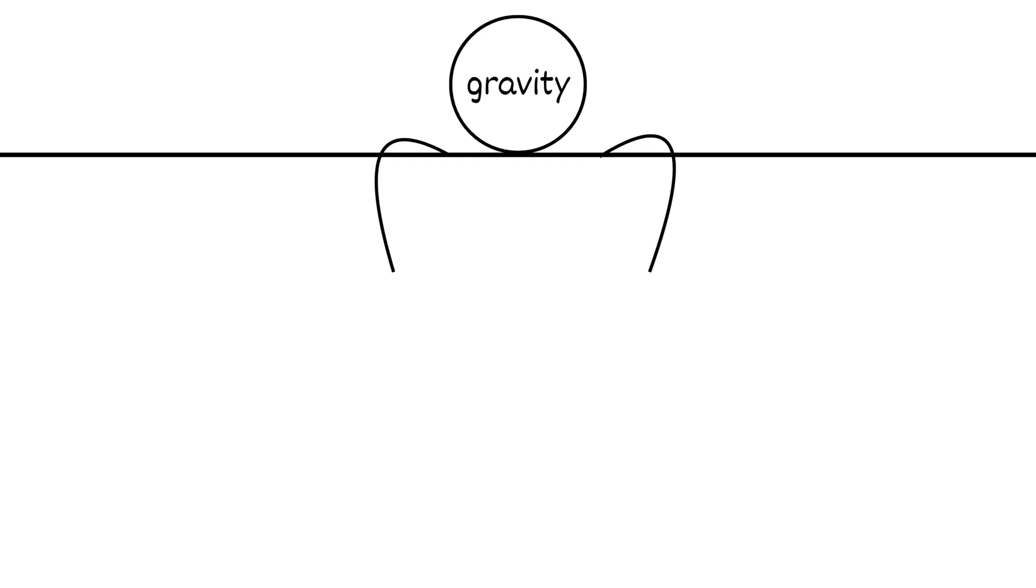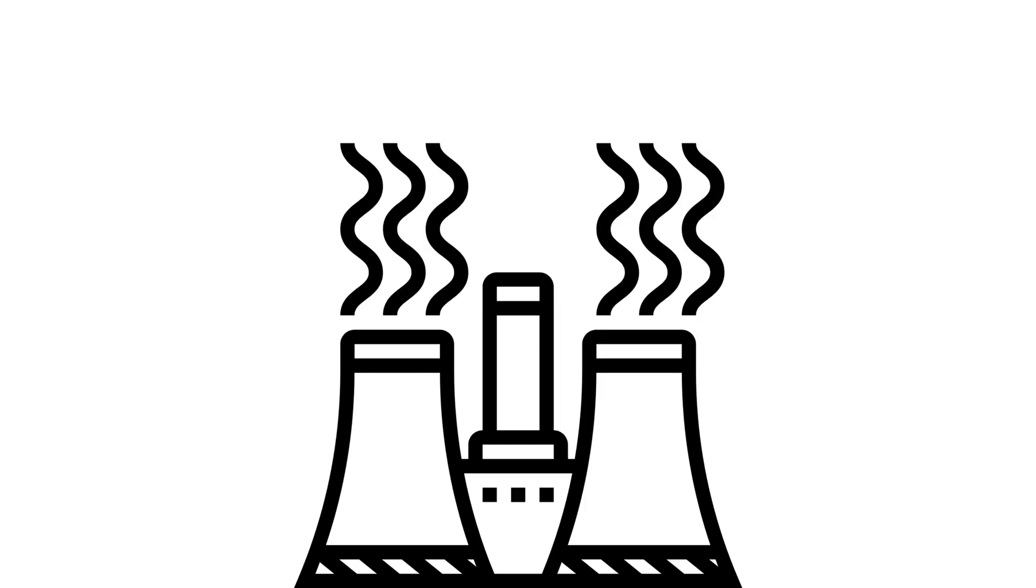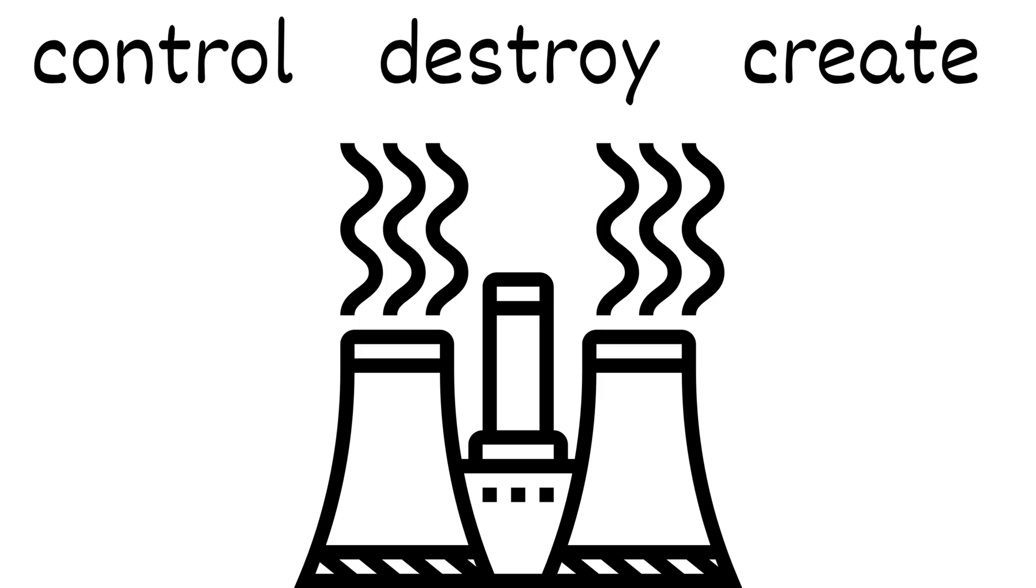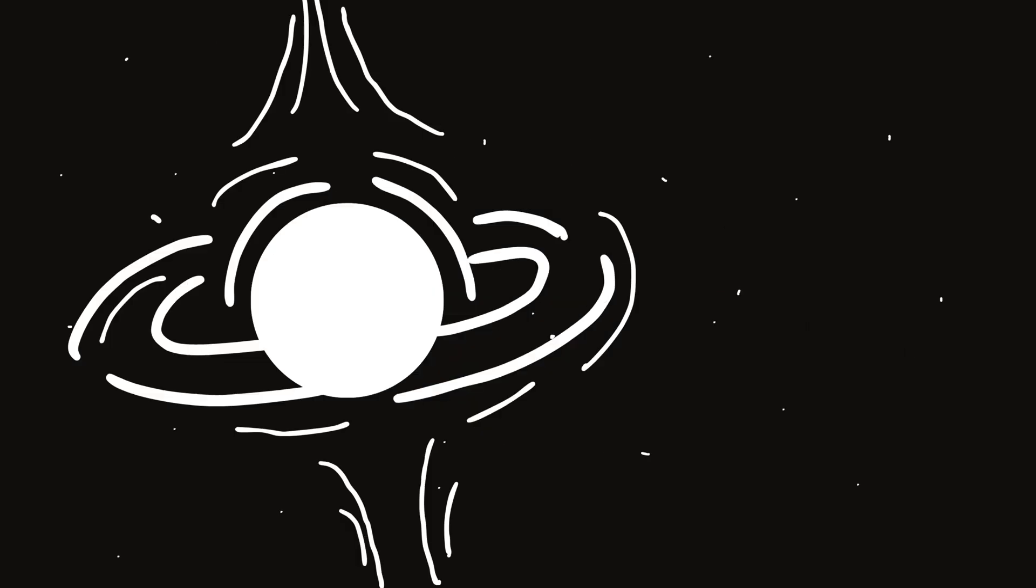These things are the heart of galaxies. Their gravity shapes how stars move and how galaxies spin. When they feed, by pulling in gas and dust, they can light up brighter than the rest of the galaxy combined. That's what we see as a quasar. Supermassive black holes are basically the universe's power plants. They can control, destroy, or even create entire galaxies. Without them, galaxies like the Milky Way might not even hold together. So yeah, they're terrifying, but we kind of owe them everything.